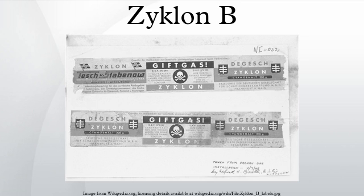Zyklon A was a previously produced liquid pesticide which released hydrogen cyanide in a chemical reaction with water. After the invention of Zyklon B, Zyklon A production ceased. The product is infamous for its use by Nazi Germany to murder an estimated 1.2 million people, including approximately 960,000 Jews, in gas chambers installed in several extermination camps during the Holocaust.